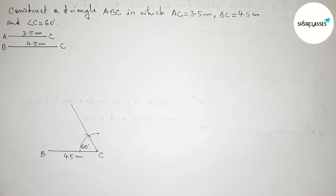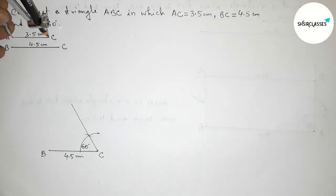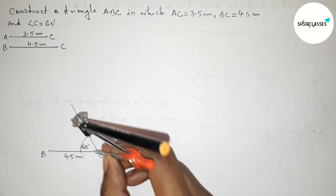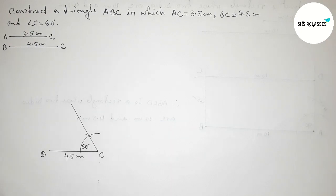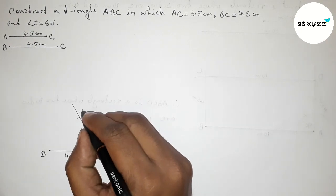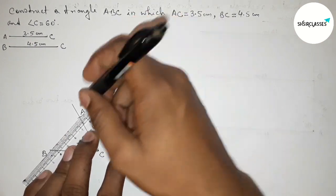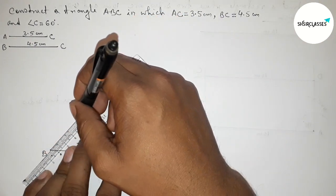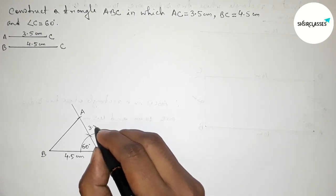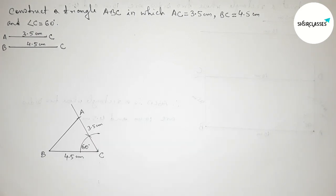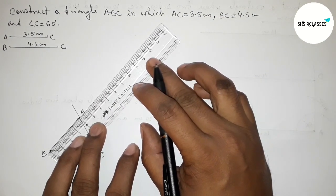Next, taking the length AC equals 3.5 centimeter with the help of a compass. Putting the compass on point C and cutting an arc along the 60 degree ray. Taking that intersection as point A and joining side AB to complete triangle ABC. AC is 3.5 centimeter.